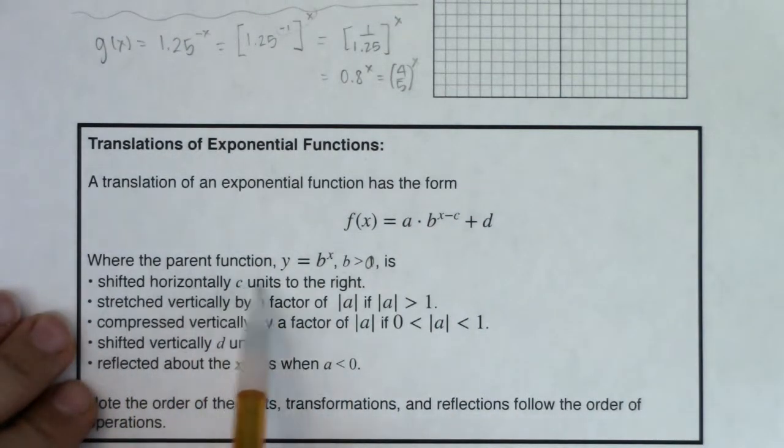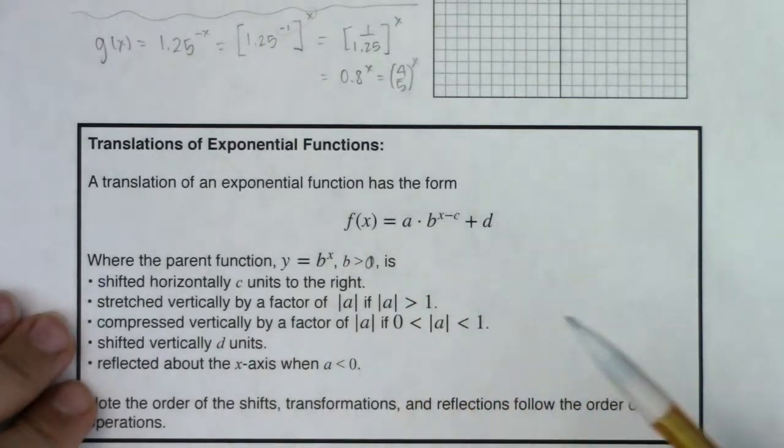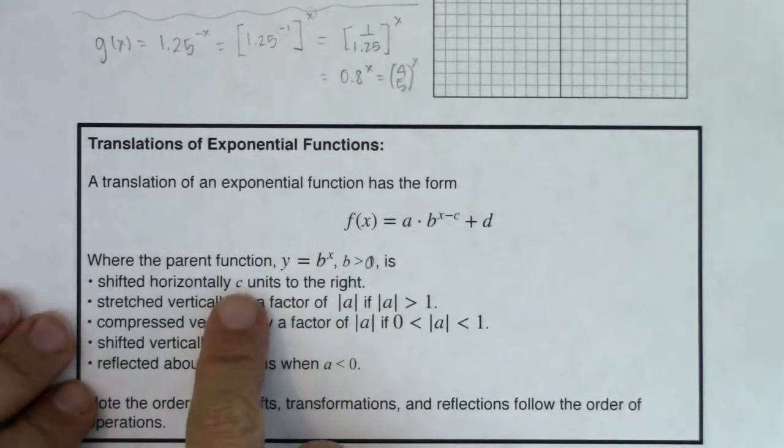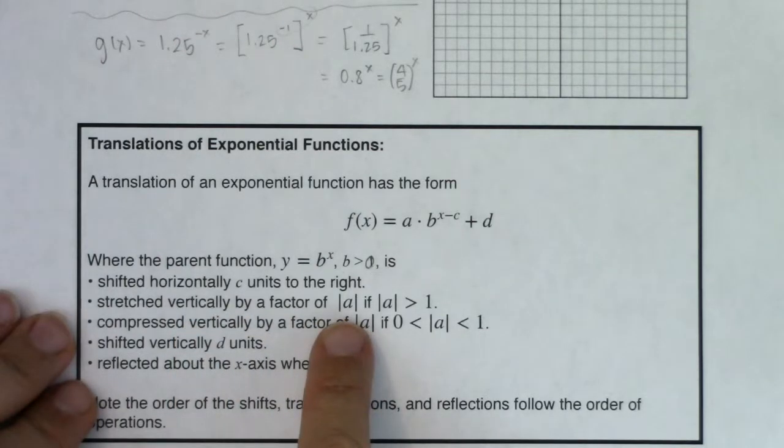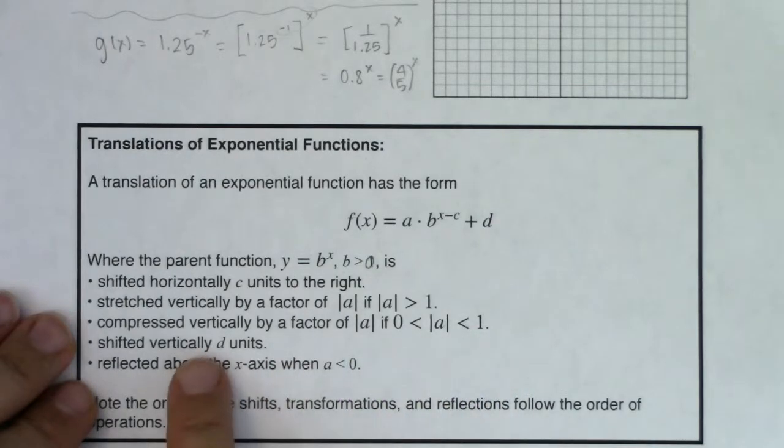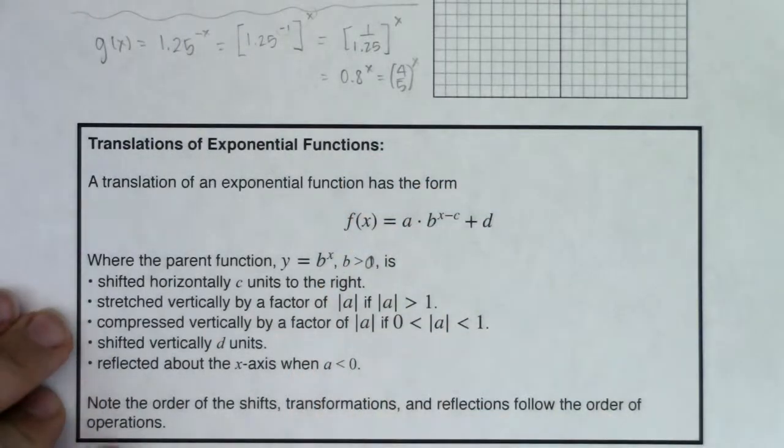You're going to shift horizontally c units to the right. And again, if this was x plus three, c would technically be negative three. So you're shifting negative three units right, or really three units left. But that c will shift you left or right, you're going to stretch vertically by this a factor as long as it's larger than one in absolute value. You're going to get compressed if a is a fraction between zero and one, you're going to shift vertically d units. And then when a itself is negative, that's when you're going to reflect over the x-axis.